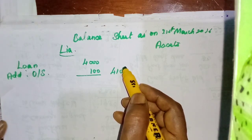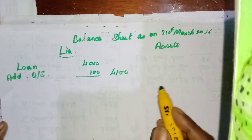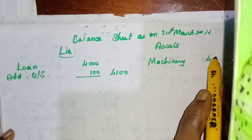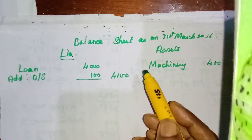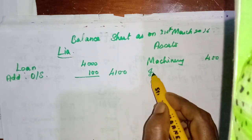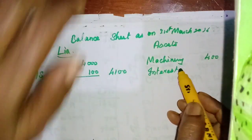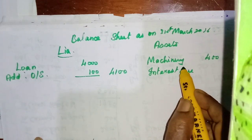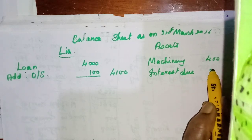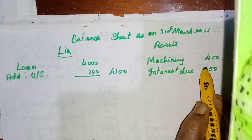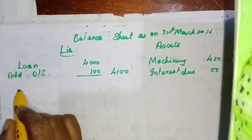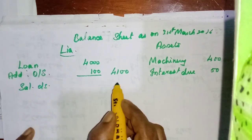Carriage and purchases, rent from tenant, interest on loan, then machinery — 400. Adjustment: 6 months interest on loan; 2 months rent due from tenant — it is an asset, rent due 50. Salary for the month of March 75 unpaid — it is a liability, salary outstanding 75.